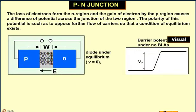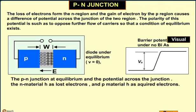The loss of electrons from the N-region and the gain of electrons by the P-region causes a difference of potential across the junction of the two regions. The polarity of this potential is such that it opposes the further flow of carriers, so that a condition of equilibrium exists. The P-N junction at equilibrium shows that the N-material has lost electrons and the P-material has acquired electrons.